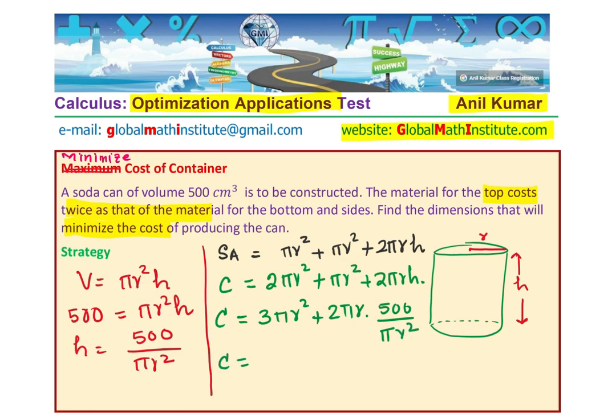Let us simplify this. We get 3 pi r squared plus pi r, and replacing h with 500 over pi r squared, pi r gets cancelled, giving us the simplified cost equation: C equals 3 pi r squared plus 1000 over r. That becomes the cost equation and should help you find the answer. At this stage, I'd like you to pause the video, answer, and then look into my suggestions.